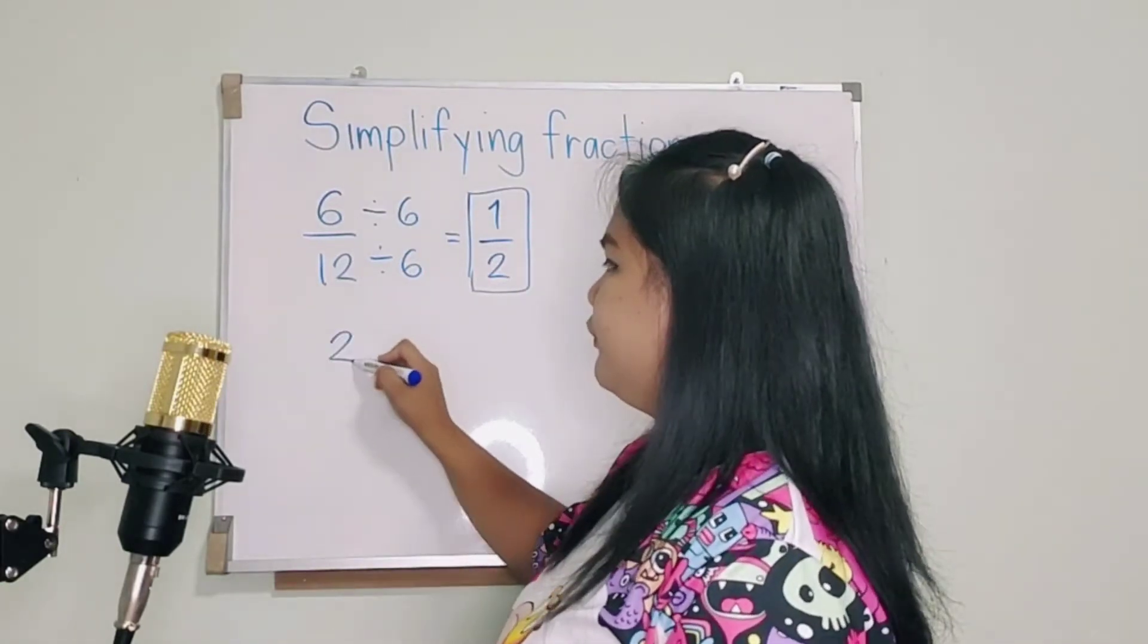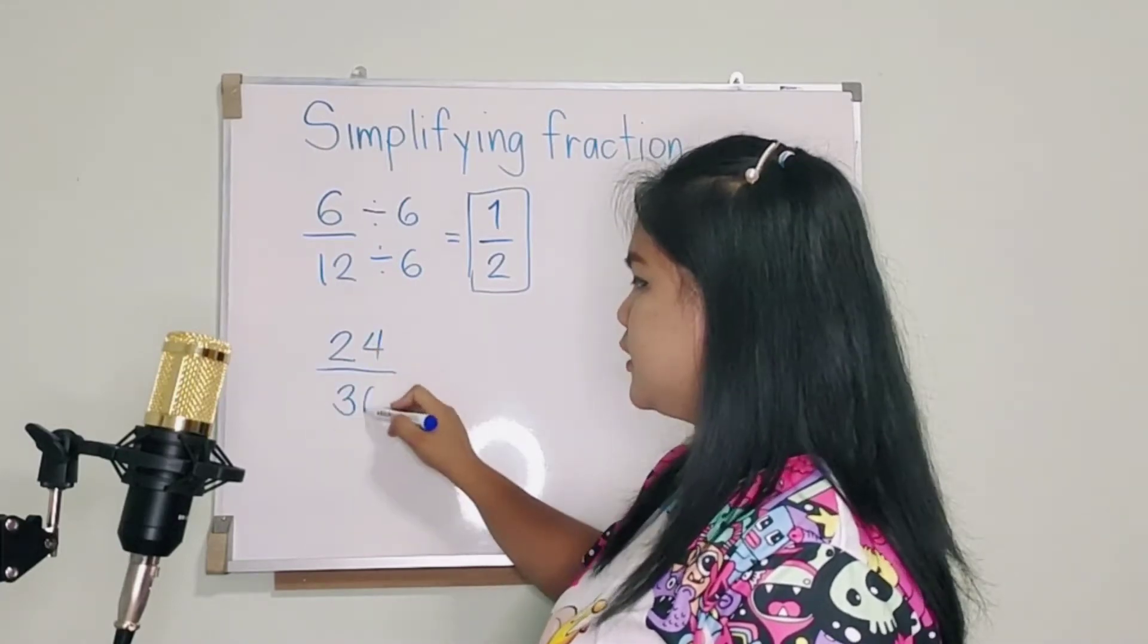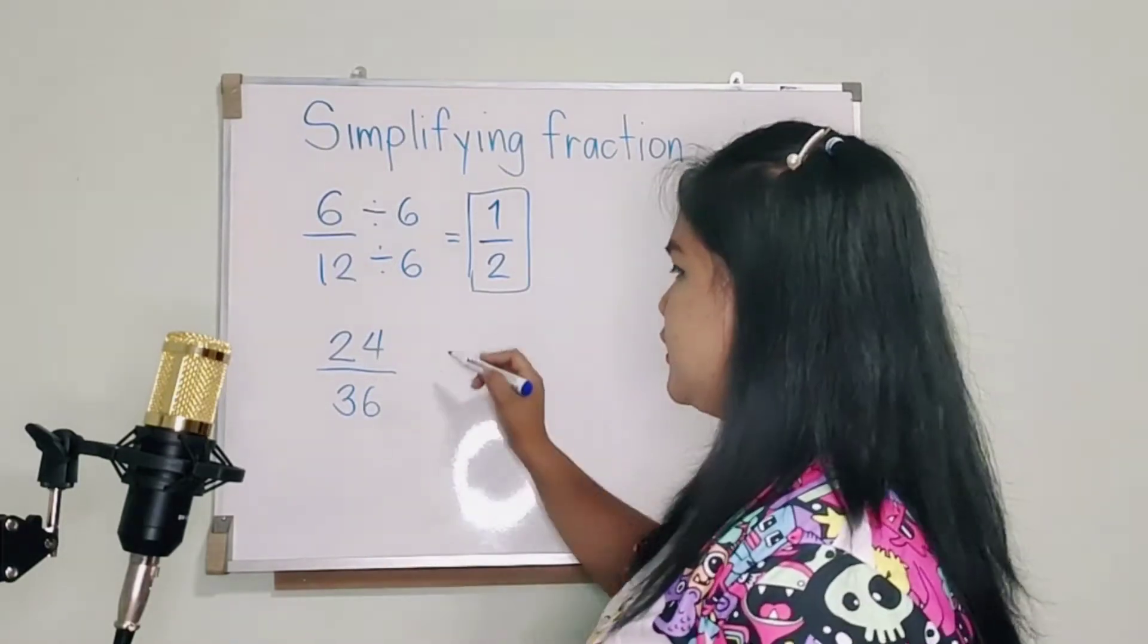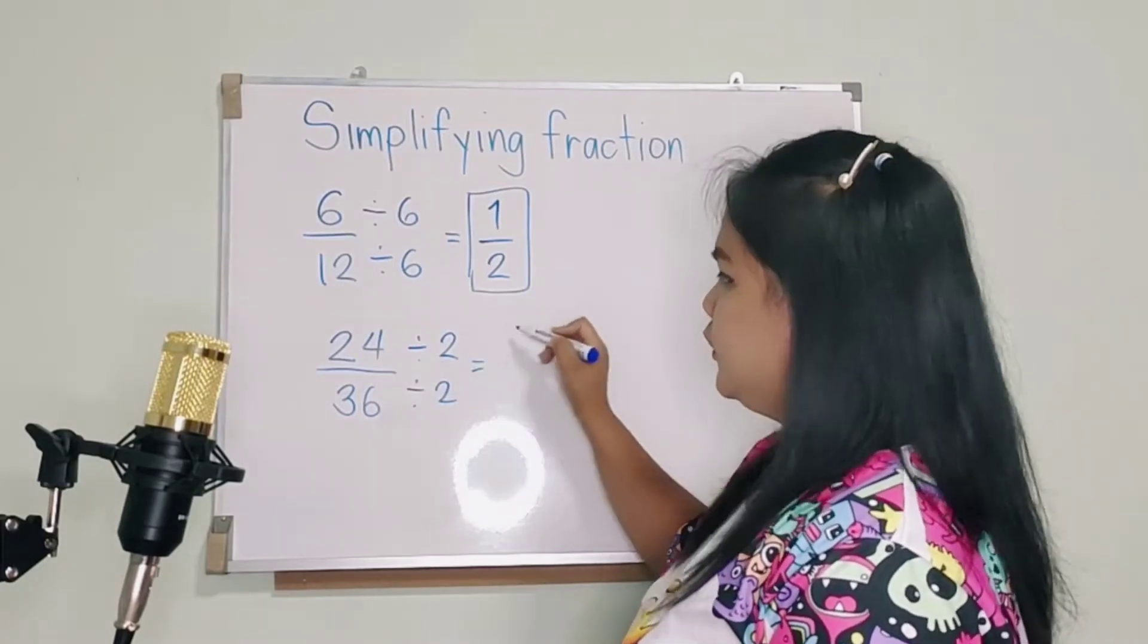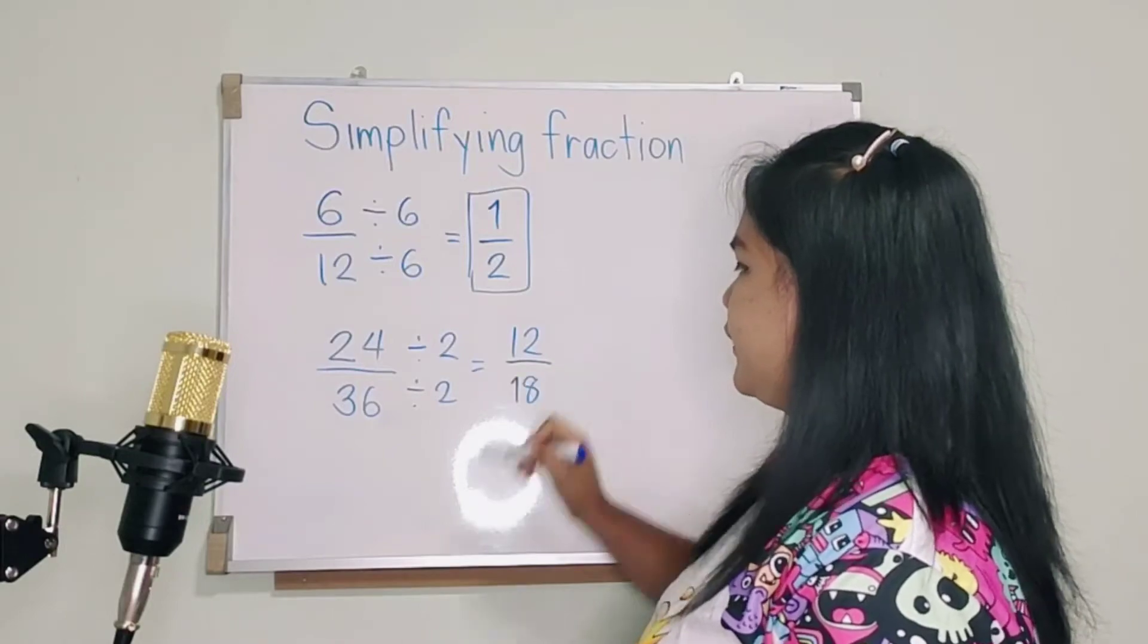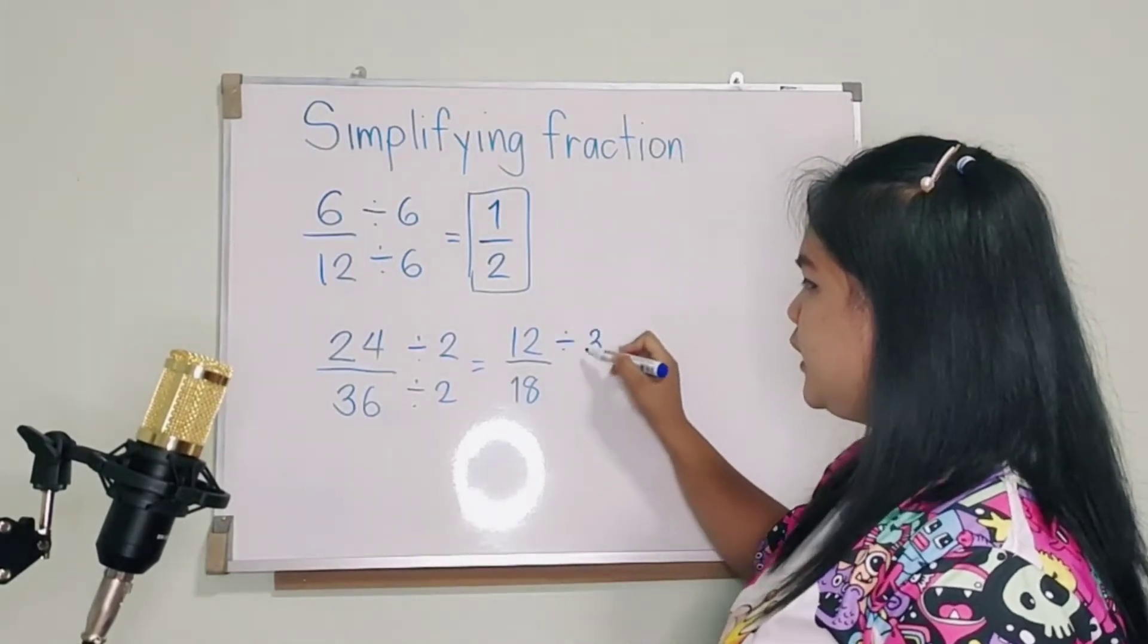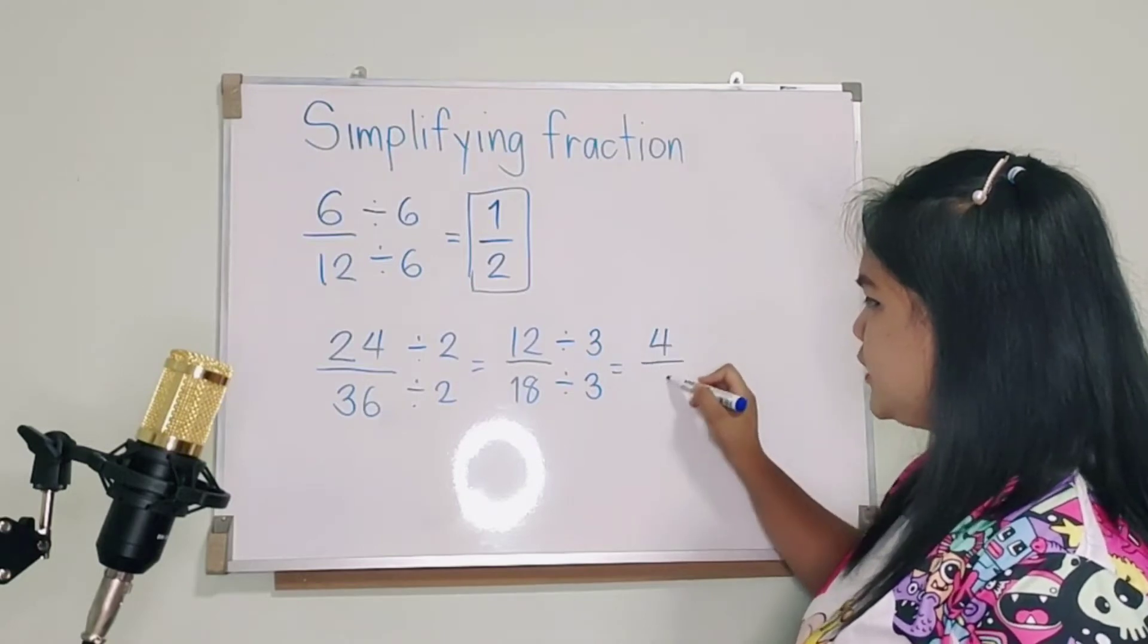Another one. We have 24 and 36. What number that can divide both sides with this number? Yes, correct. So we can use 2 if you want. It can be. So you will get 12 over 18. Now, we can divide it more. So how? We can use 3. So you will get what? 4 over 6.